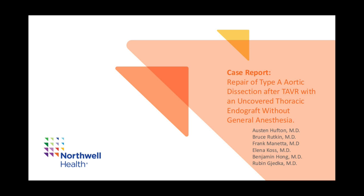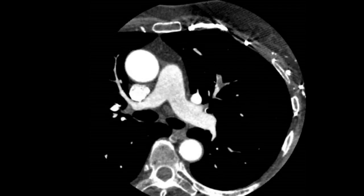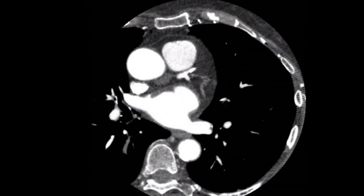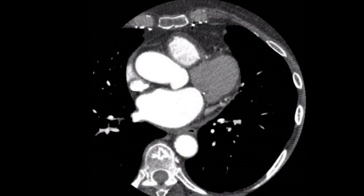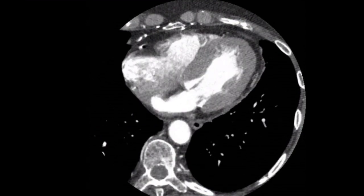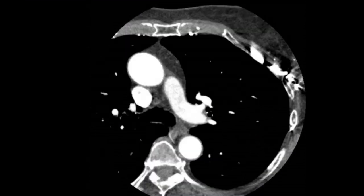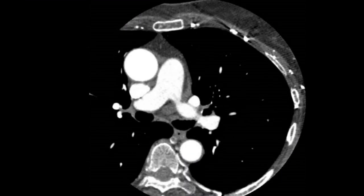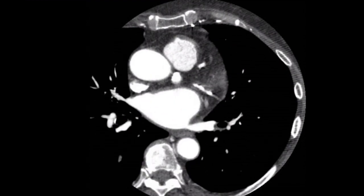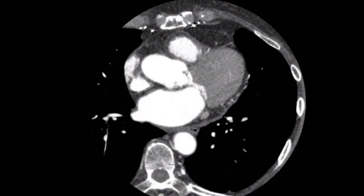A 90-year-old female presented to our practice with a history of severe symptomatic aortic stenosis. After meeting with our multidisciplinary team, she was deemed an appropriate candidate for TAVR, as she did not wish to undergo open surgery under any circumstance. Her preoperative workup included a transthoracic echo and a structural CT angiogram shown here. Based on these studies, our team recommended a TAVR with a 29-millimeter Evolute Pro valve via transfemoral access.